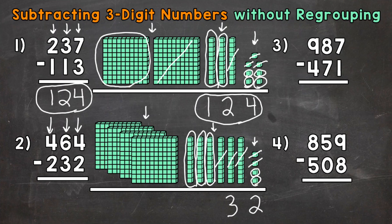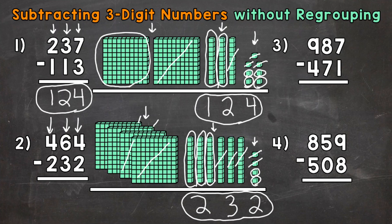And lastly, we have the hundreds. So we have four hundreds minus two hundreds. Let's subtract or take away two: one, two. So how many do we have left? One, two. So we put a two in the hundreds place in our answer. Final answer: 232.